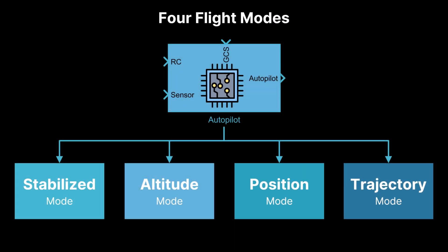Let's move on to trajectory mode. Trajectory mode, also known as mission mode or auto mode, the quadcopter follows a predefined flight path or waypoint mission autonomously. The autopilot handles navigation, altitude changes, and speed adjustments without real-time pilot input. This mode can be used for autonomous missions like surveying, mapping, and delivery operations.